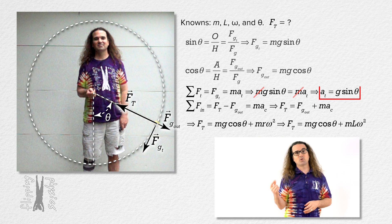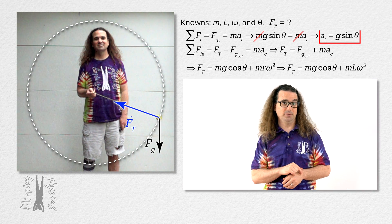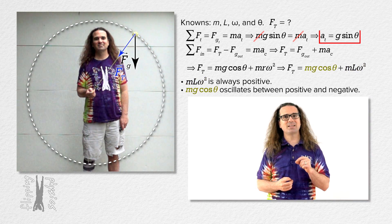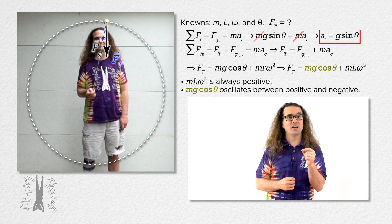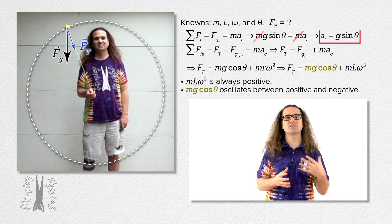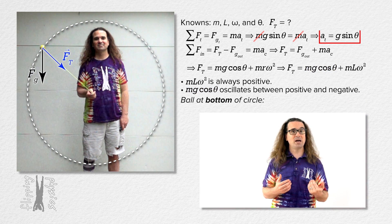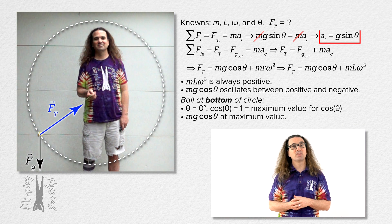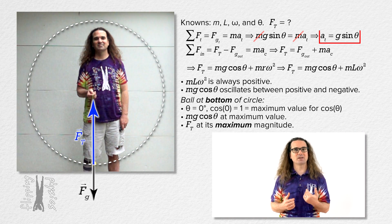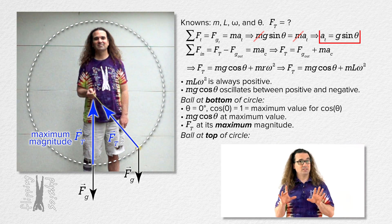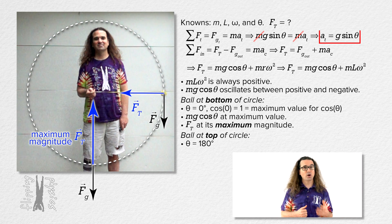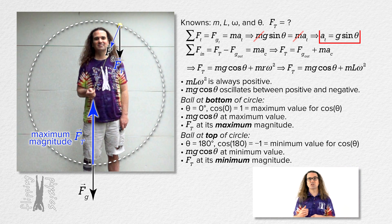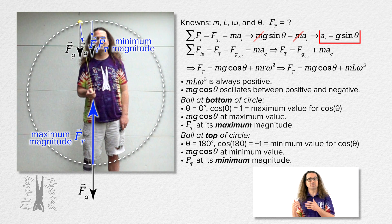The equation we just derived matches what we previously showed visually. The term m·L·ω² is always positive. The term m·g·cos θ oscillates back and forth between positive and negative values as theta changes. When the ball is at the bottom of the circle, theta equals zero, cosine of zero equals one, and that term has its maximum value — therefore the force of tension is at its maximum value at the bottom. When the ball is at the top of the circle, theta equals 180 degrees, cosine of 180 degrees equals negative one, and that term has its minimum value — therefore the force of tension is at its minimum value at the top of the circle.